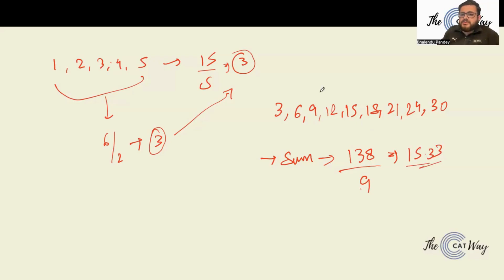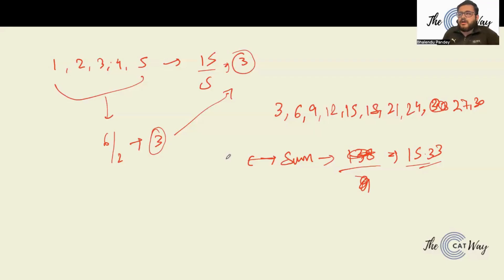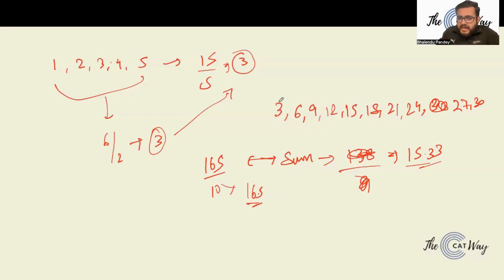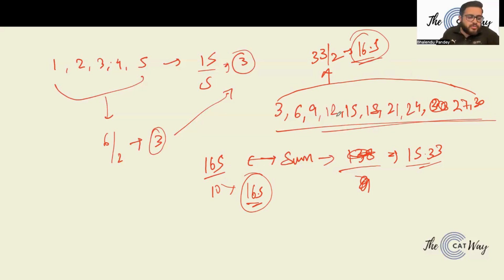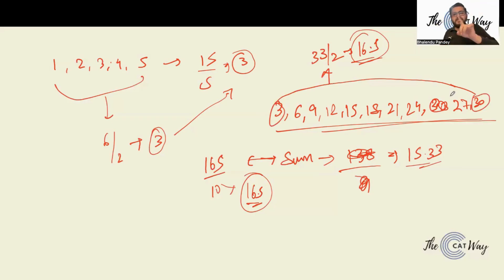Correction: the series should include 27 and 30, making it 10 values with a sum of 165. So 165 divided by 10 gives an average of 16.5. Using the AP formula: first term plus last term is 3 plus 30 = 33, divided by 2 also gives 16.5. This confirms the formula works.